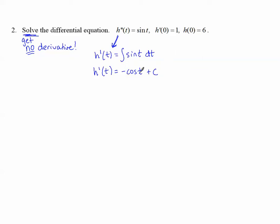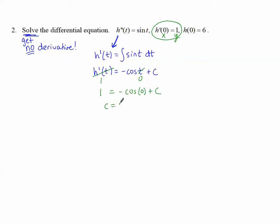Check: the derivative of cosine of T is negative sine of T, so two negatives make positive sine of T. Now we have two initial conditions. Here's the first initial condition we'll use because we have H prime, and this involves H prime. The number plugged in is the X, and what it equals is the Y. So in place of H prime of T we put 1, and in place of T we put 0. So 1 equals negative cosine of 0 plus C. Since cosine of 0 is 1, C equals 2.